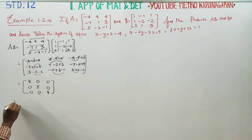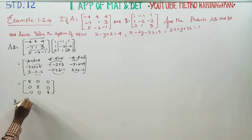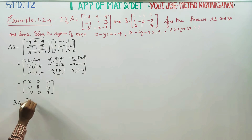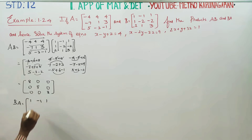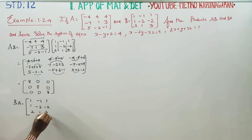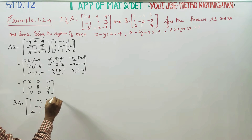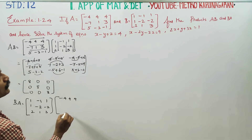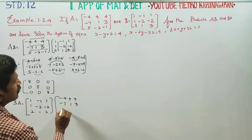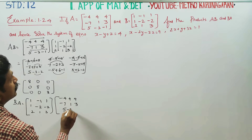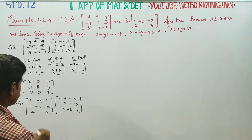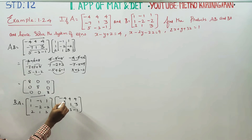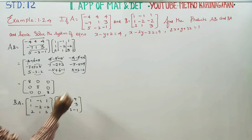If you find BA, then BA: the B matrix first is 1, minus 1, 1, 1, minus 2, minus 2, 2, 1, 3. Now B matrix first you have seen. Followed by A matrix: minus 4, 4, 4, minus 7, 1, 3, 5, minus 3, minus 1. You have to multiply row into column again.